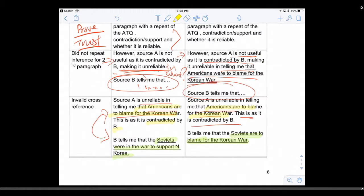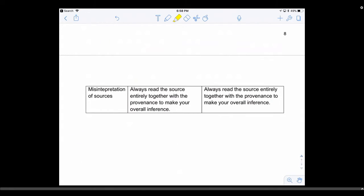One more: misinterpretation. Read the source in its entirety before you come to your conclusion. Do not read one or two lines and make a judgment. Look at the provenance, look at who said it, look at what is said, then make your judgment. This prevents you from misinterpreting the source, because it will be very sad if you do that and write the whole paragraph for nothing.